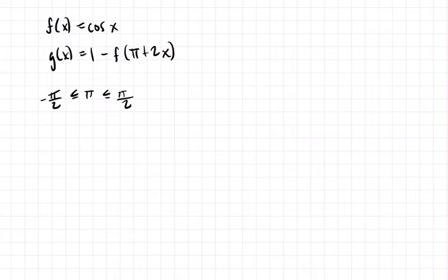Hello, welcome. In this video, we're looking at a parent function f(x) = cos(x) and we're trying to use that parent function to graph g(x), which is equal to 1 minus f of pi plus 2x. We're doing this over the domain of negative pi over 2 to positive pi over 2.